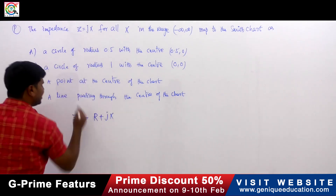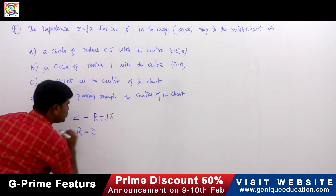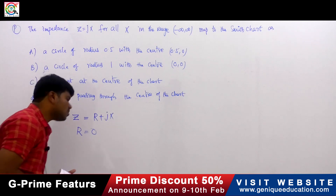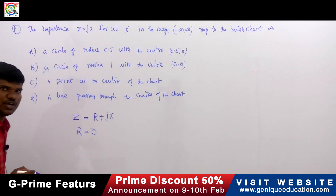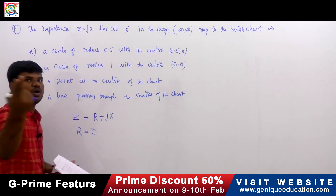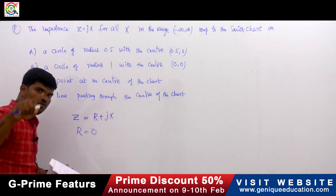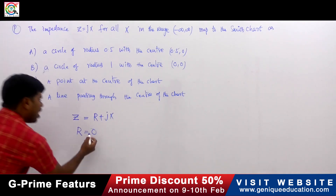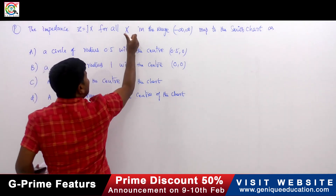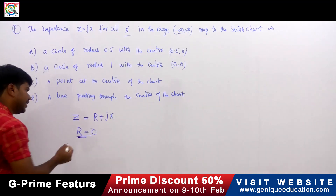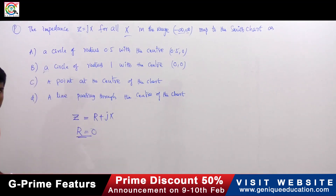Comparing Z = jX to R + jX, we find that R equals 0 — the real part of the normalized impedance is 0. The Smith chart consists of two orthogonal circles: constant-R circles and constant-X circles. Here, X is ranging from minus infinity to infinity, and R equals 0.